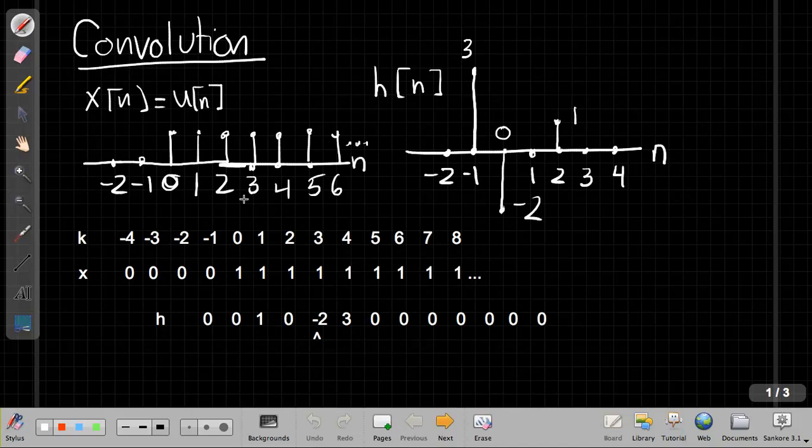The second thing worth pointing out is we say, looking at this impulse response, if we think about what we've talked about with causality of LTI systems, this would be a non-causal system, because the impulse response has some value that's not 0 for n less than 0, right? At minus 1, it's 3, which is not 0.